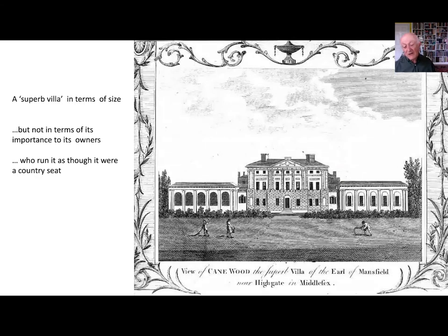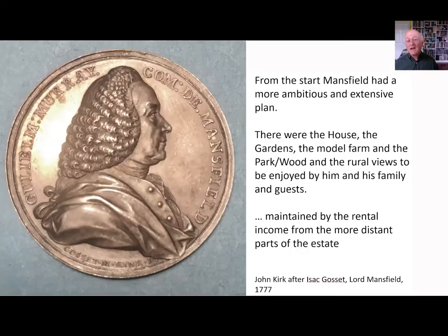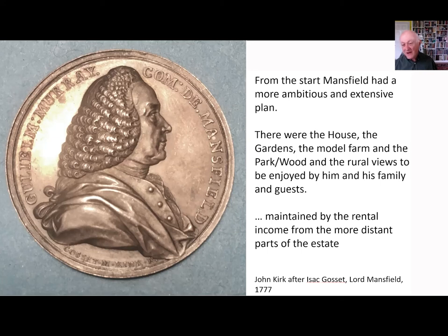We begin by looking at a very familiar image of Kenwood, where it is described as a superb villa. And perhaps it was a villa in terms of size, but it certainly wasn't a villa in terms of its importance to its owners, because they ran it as though it were the pearl of a traditional country estate. Here we see Lord Mansfield in what I think is a really sensitive portrait of him. It's quite clear that from the start — and here Ian Trackman is the expert — for Mansfield, the core features of the estate were the house, the gardens, the model farm, the park — the miniature park — and the rural views that could be enjoyed by his guests.